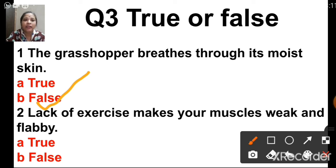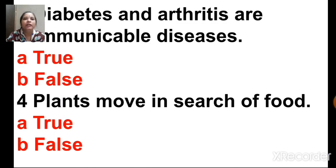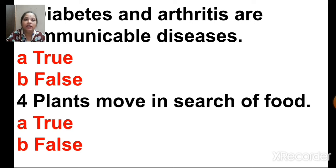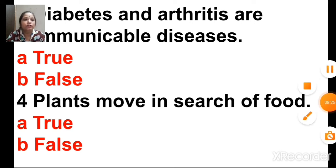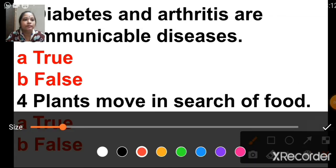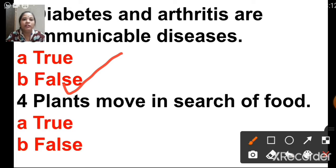Lack of exercise makes your muscles weak and flabby — that is true. Diabetes and arthritis are communicable diseases — that is false; diabetes and arthritis are non-communicable diseases. Plants move in search of food — that is false; plants do not move, only a part of a plant can move.